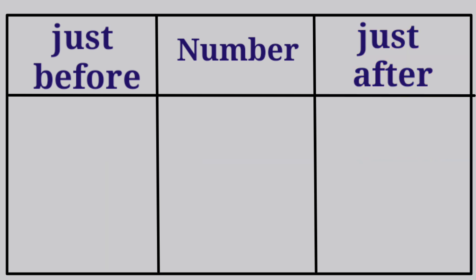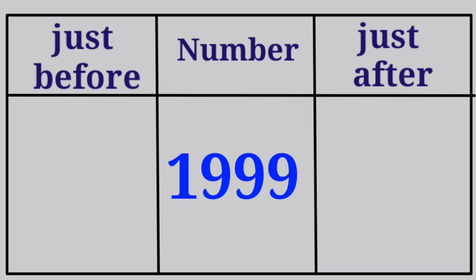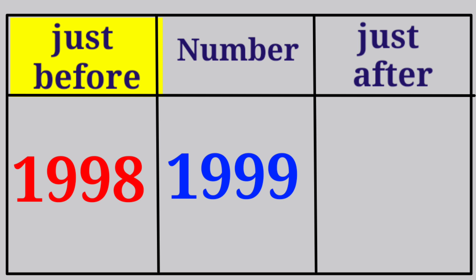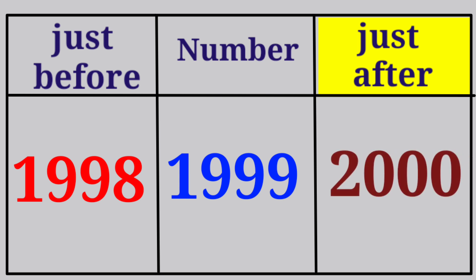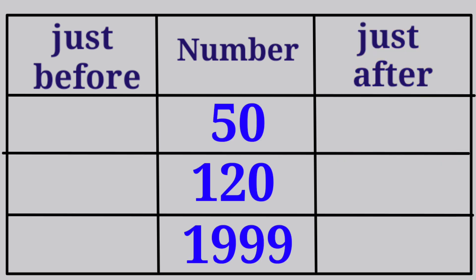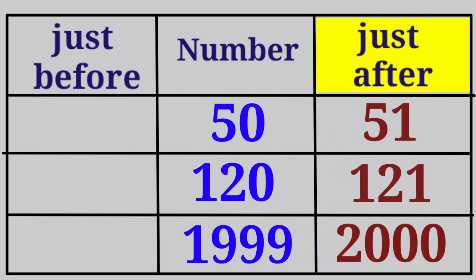Now let's look at 4-digit numbers. The given number is 1999. The number just before 1999 is 1998, and the number just after 1999 is 2000. Remember: the number just after any number is greater by 1, and the number just before is smaller by 1.